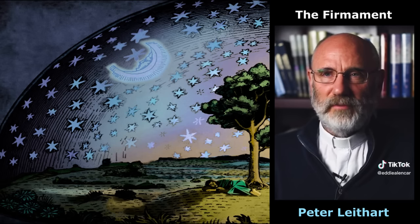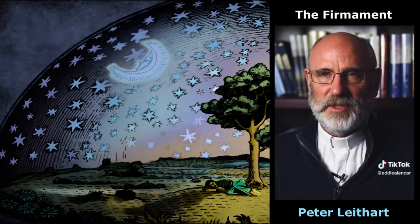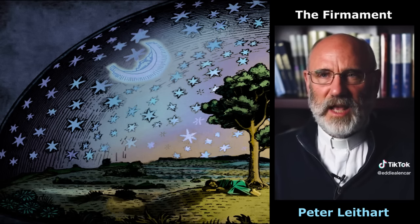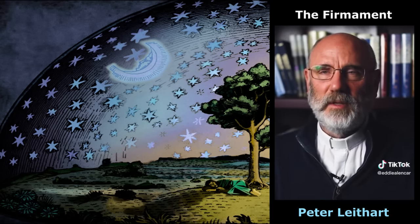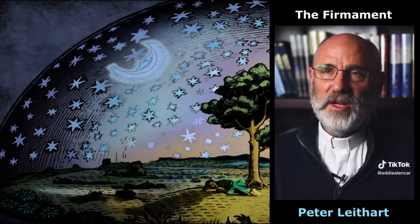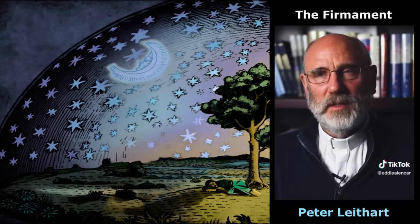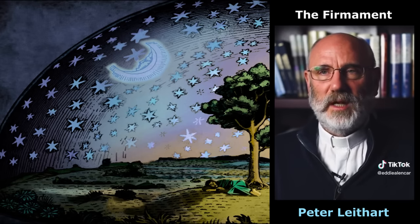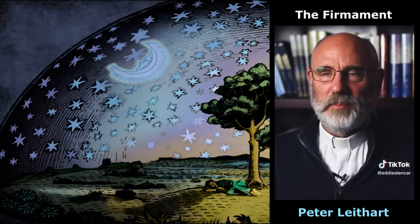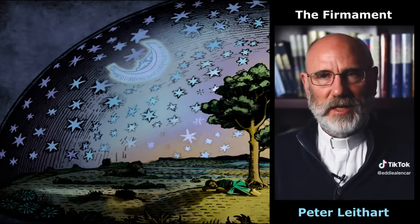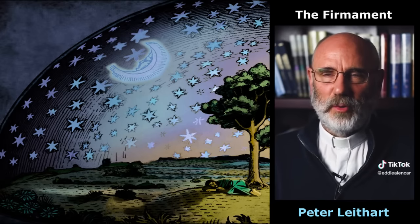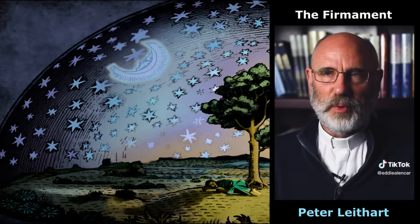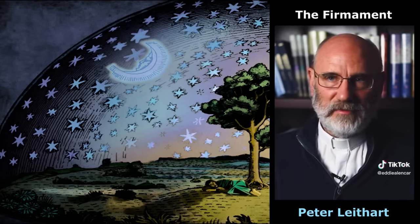That analogy between temple-building and creation informs our understanding of what the firmament is. The firmament is not just a flat shell or dome above the earth — it actually has depth. We know that not only from the creation week, because the sun, moon, and stars are placed in the firmament, but also from several places in the Psalms where the firmament, the visible heavens, is compared to a tabernacle. Psalm 19 tells us the Lord has made a tabernacle for the sun, and Psalm 150 begins with an exhortation to praise him in the sanctuary and in the firmament.